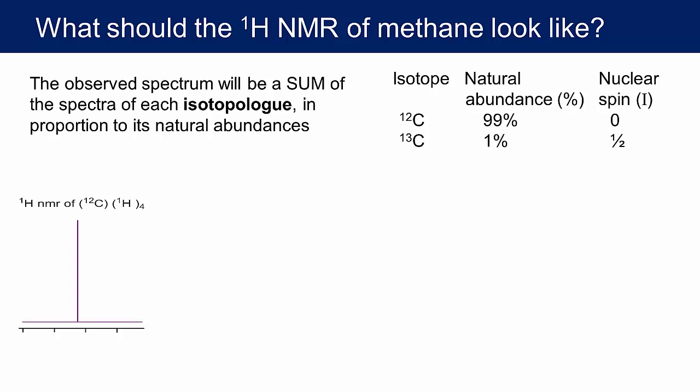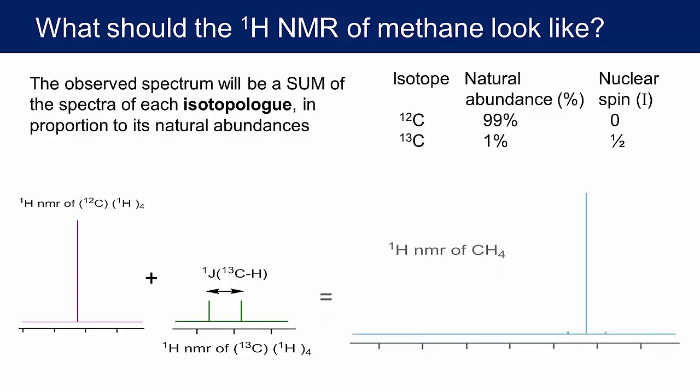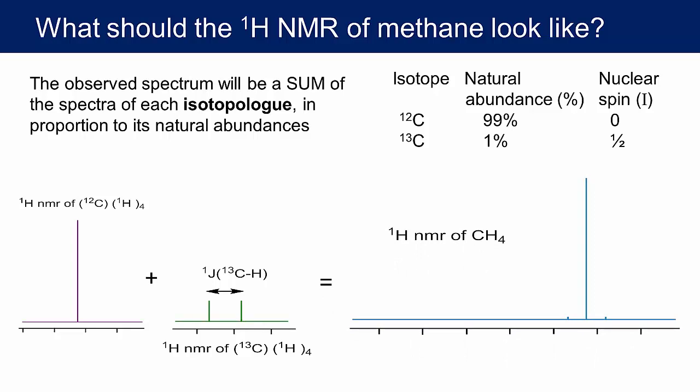The next most abundant isotopologue has a carbon-13 atom and four protium atoms. Again, by symmetry, each hydrogen is in the same chemical environment with identical chemical shifts, so a single peak with a chemical shift very close to that of the first isotopologue. However, in this molecule the carbon-13 atom has a nuclear spin I equals one half, meaning MI values take plus one half and minus one half, splitting the signal into a doublet with the one-bond carbon-13 to proton coupling constant. Our observed spectrum will be the superposition of these two subspectra: a big dominant peak with two smaller satellite peaks.